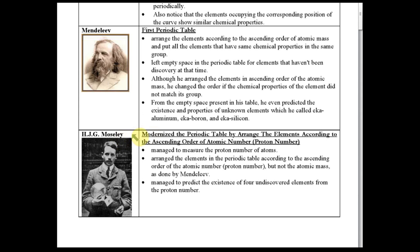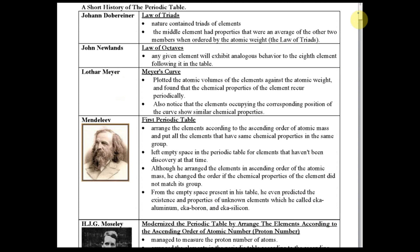For Moseley, you just need to know that he arranged the elements in ascending orders of atomic number, where atomic number is the proton number. For Mendeleev, you need to know all his contributions. For Meyer, you need to know the Meyer curve — plotting a graph of atomic volume against atomic mass.